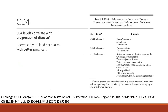HIV severity and progression to AIDS can be monitored with two main factors: viral load and CD4 count. According to the CDC, the diagnosis of AIDS for a person with HIV is a CD4 less than 200 or an AIDS-defining illness. It makes sense then that lower CD4 correlates with disease progression and maintaining a lower viral load is key to having a better outcome. In the table on the right, taken from the New England Journal of Medicine, you can appreciate the different diseases that manifest with decreasing CD4 count.